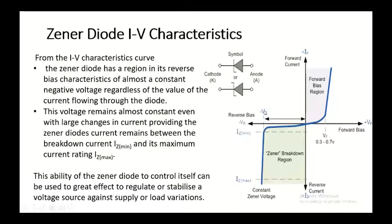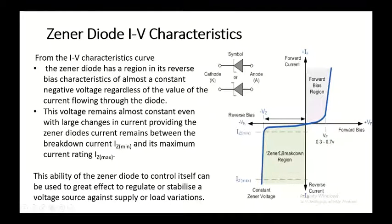As we increase the reverse voltage, when it reaches the value VZ — the Zener voltage — there will be a reverse breakdown current IZ minimum. From there the voltage remains constant. Even though there is an increase in current, the voltage remains constant. IZ max indicates the maximum current rating of the Zener diode.